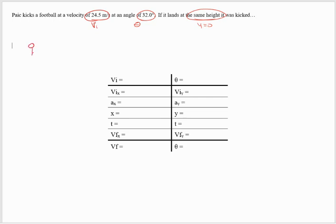So if I draw a picture, I have Pitch here with the football. If I have this straight line that he's standing on, the football is going to do one of these things and land over here where the Y displacement is zero.